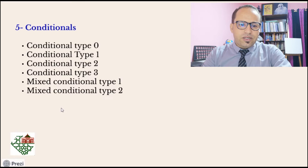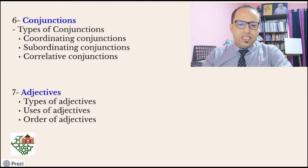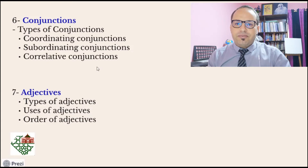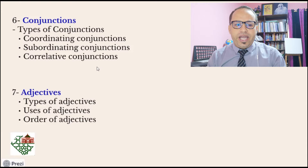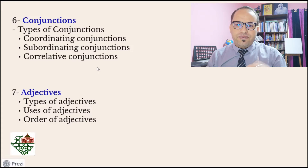After that, we study conjunctions — coordinating conjunctions, subordinating conjunctions, and correlative conjunctions. The main function of a conjunction, whether coordinating, subordinating, or correlative, is to link and connect or join two ideas, two clauses, or two phrases and establish the relationship between them. We will see the different kinds of conjunctions and how to use them appropriately in different contexts.